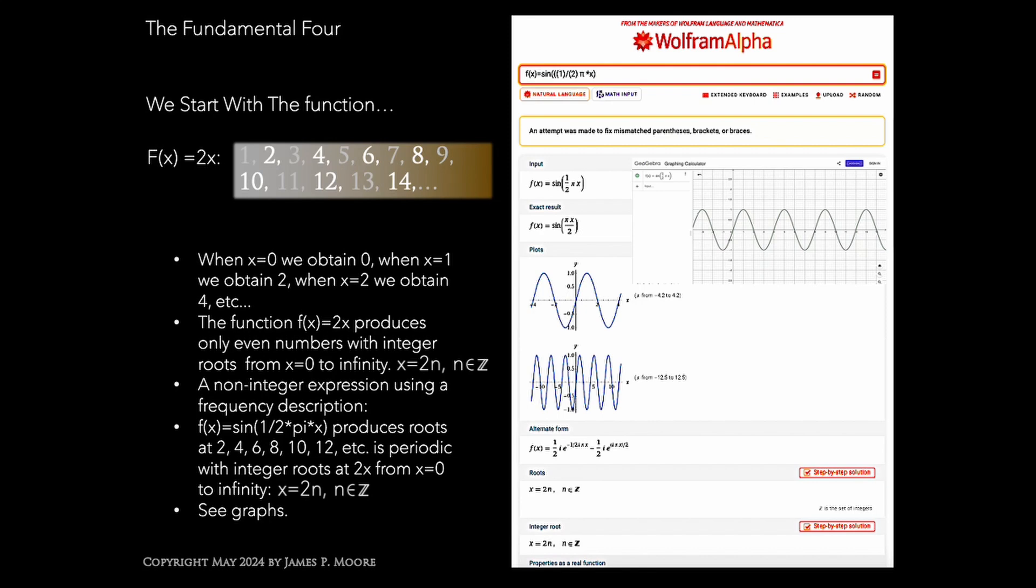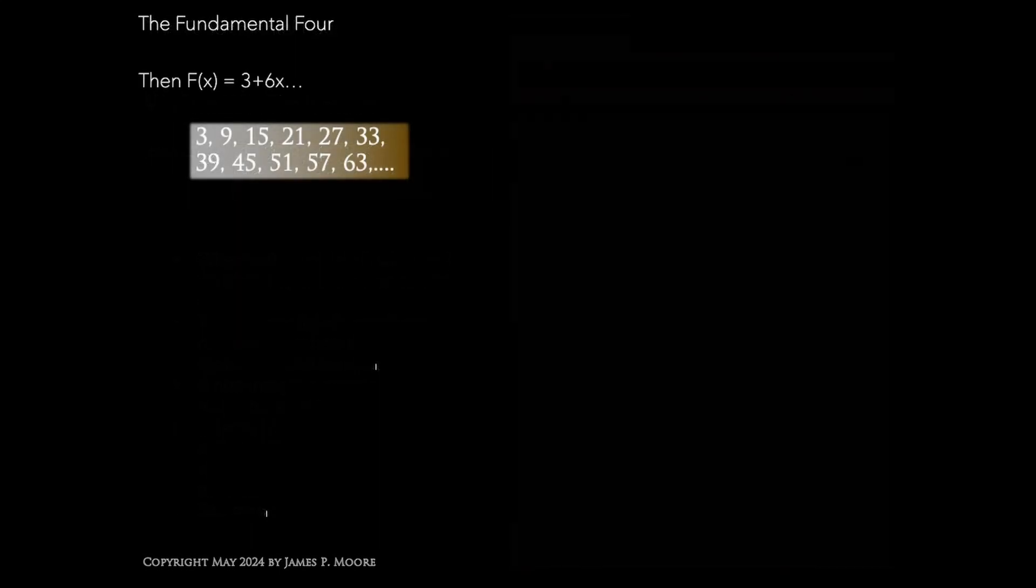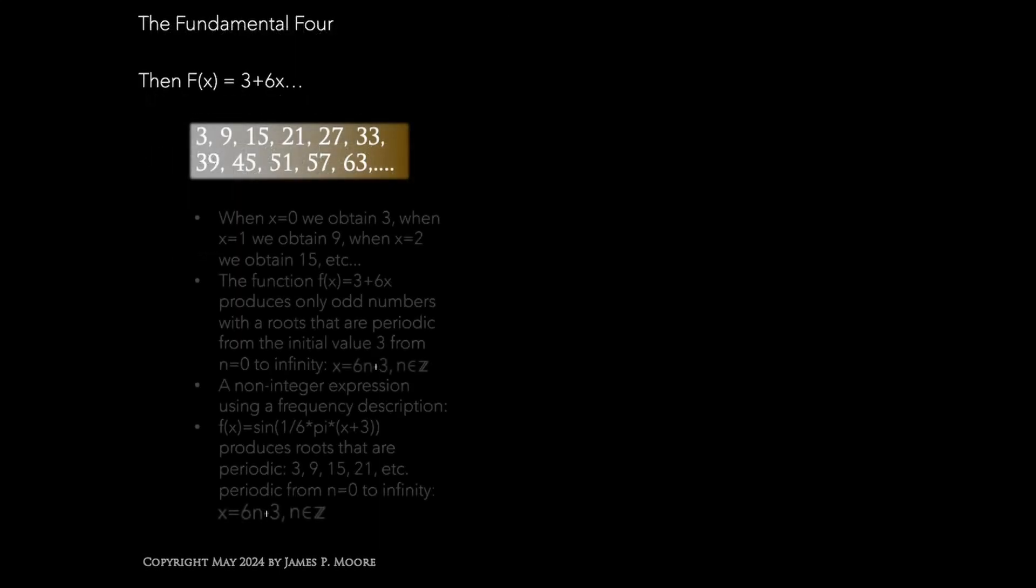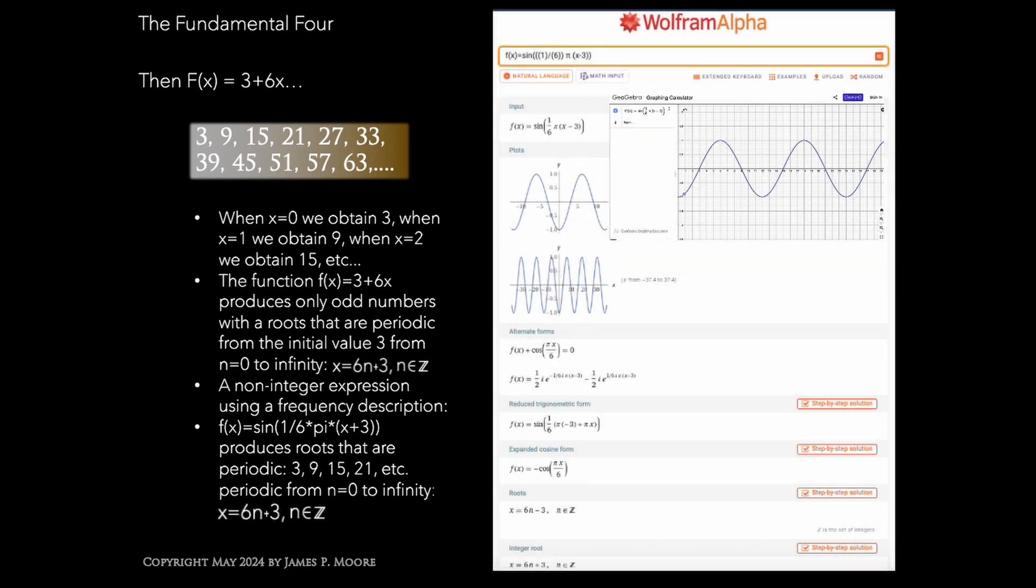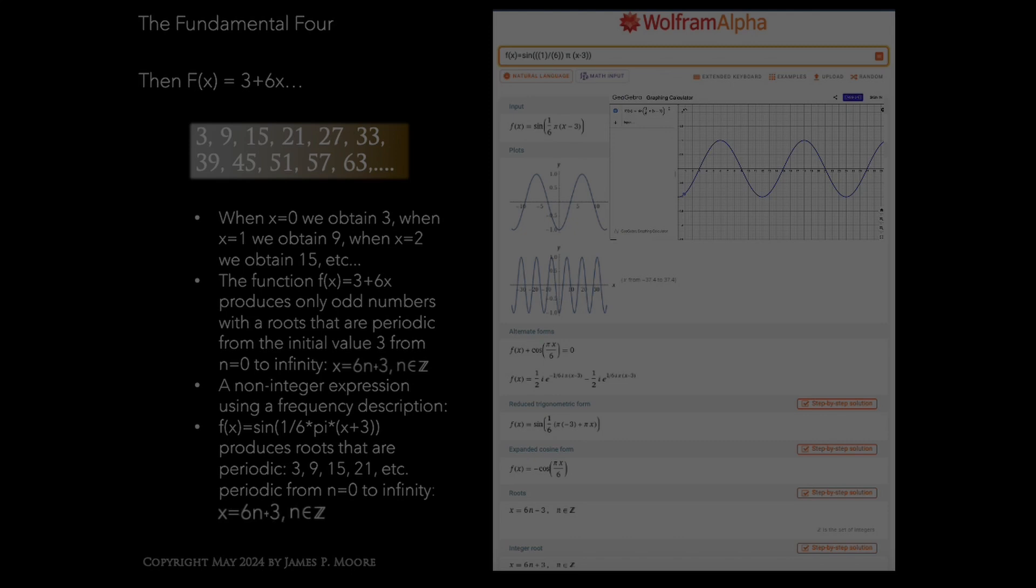Similarly, 3 plus 6x, if we use the equation sine of one-sixth times pi times x minus 3, we obtain roots of 3, 9, 15, 21, etc. from 0 to infinity.